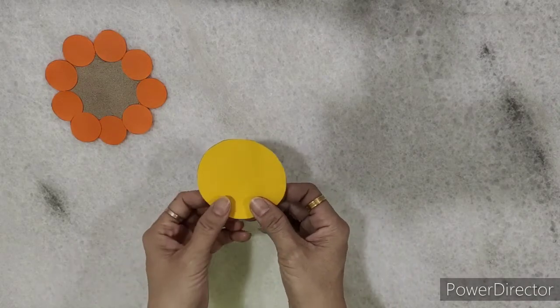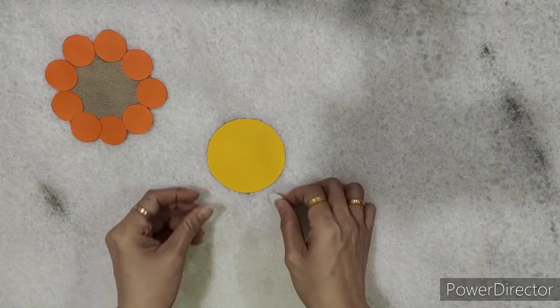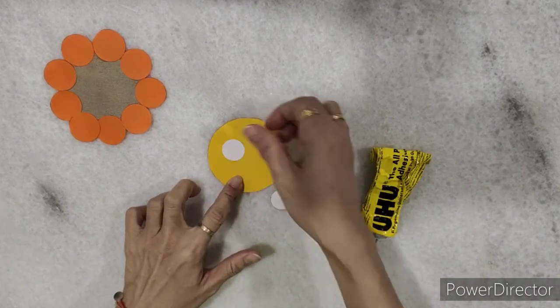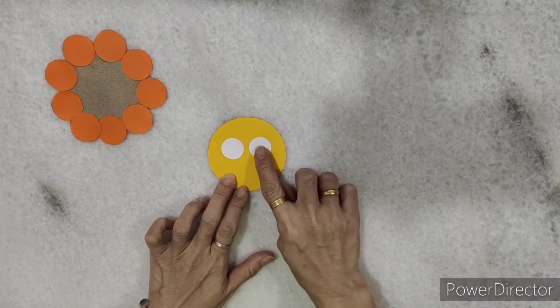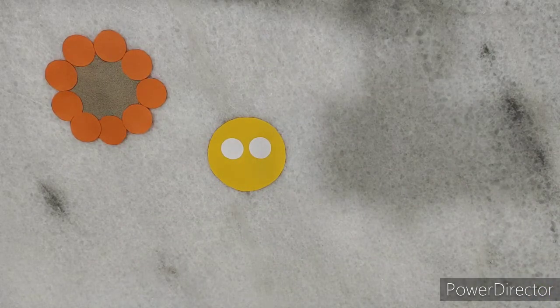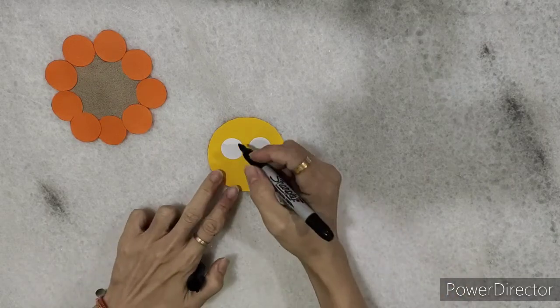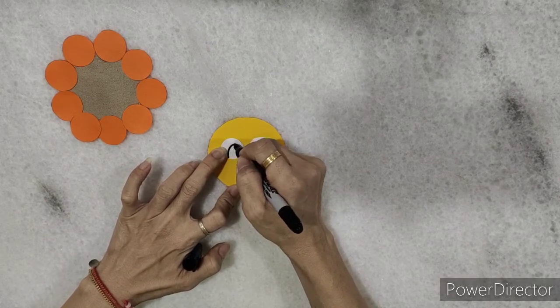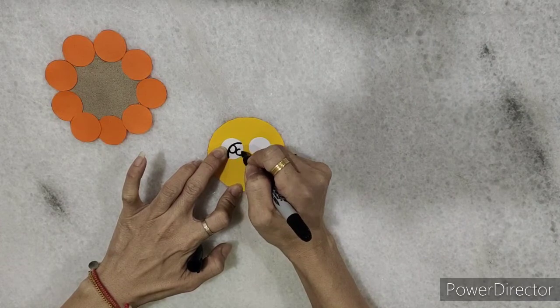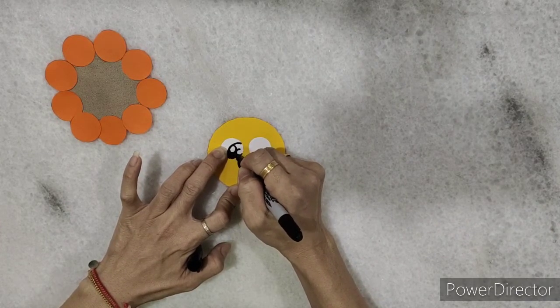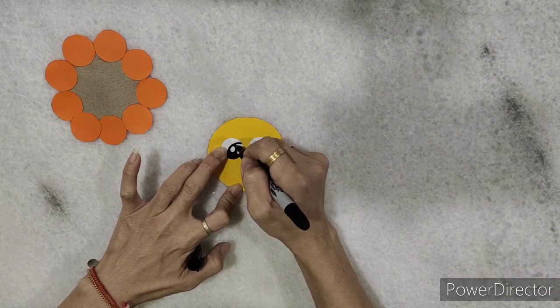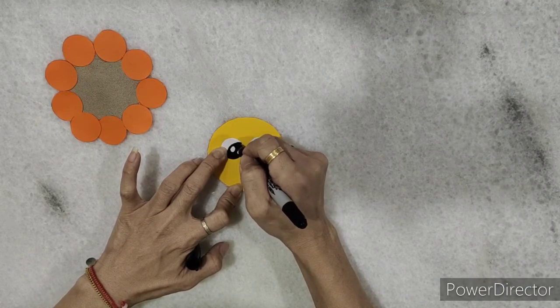Now, take the color paper circle and the white small circles. Paste the white circles, like this. Use the marker pen to draw the eyes on the white circles. We can also draw the nose and mouth, like this.